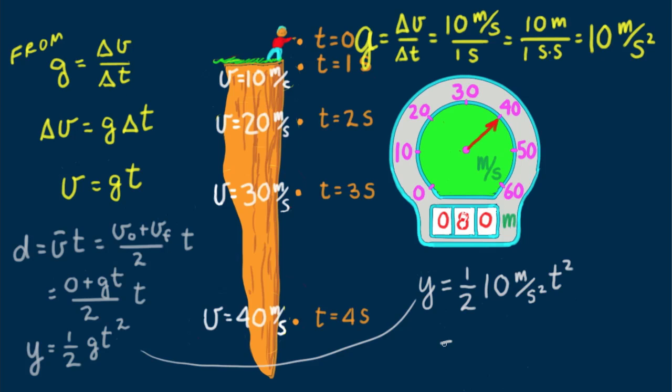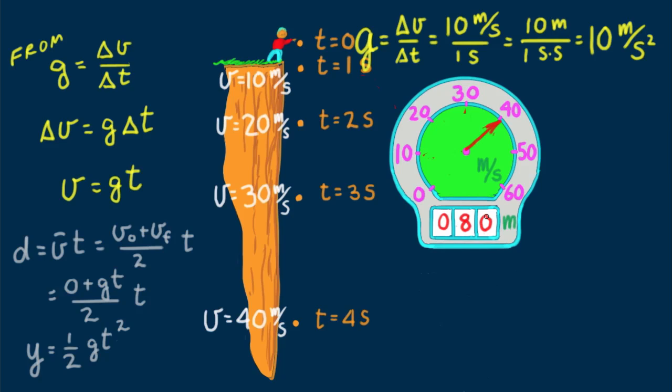For numerical values, distance of fall is given by 1 half of 10 meters per second squared, which is 5 meters per second squared, multiplied by t squared. This agrees with the 5 meters, 20 meters, 45 meters, and 80 meter odometer distances of fall. Got it?